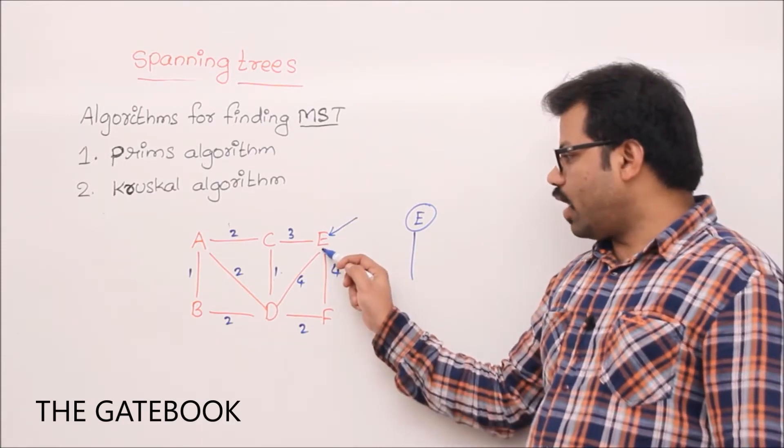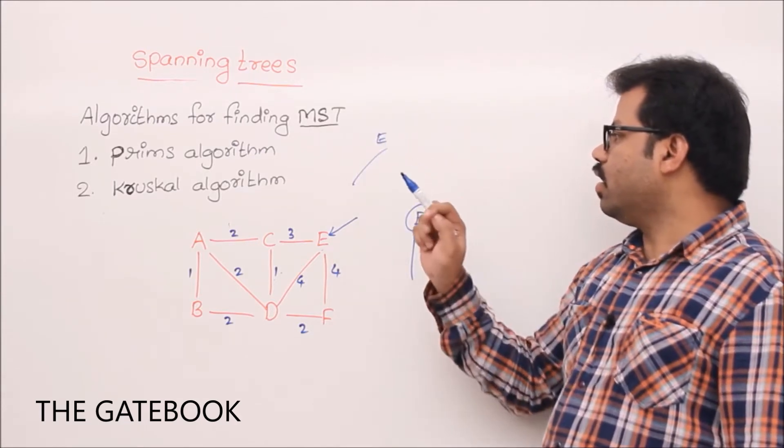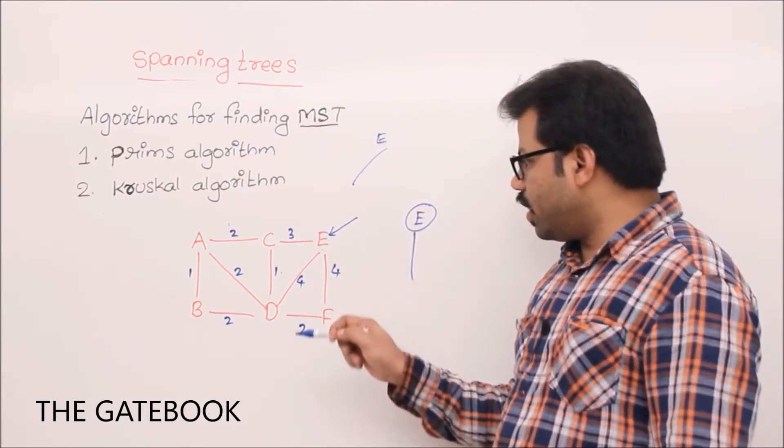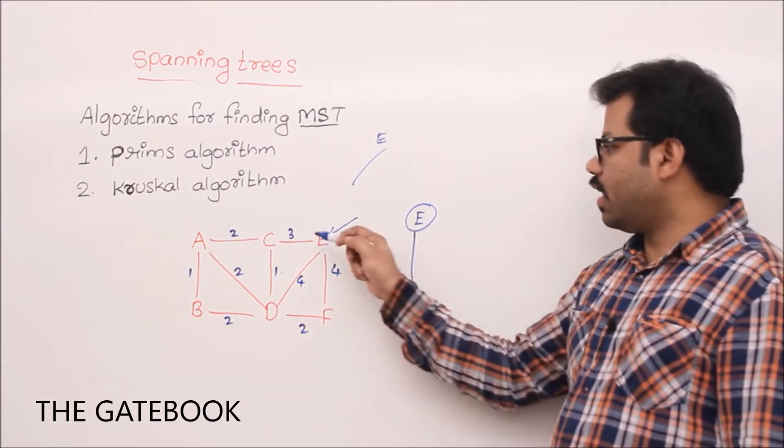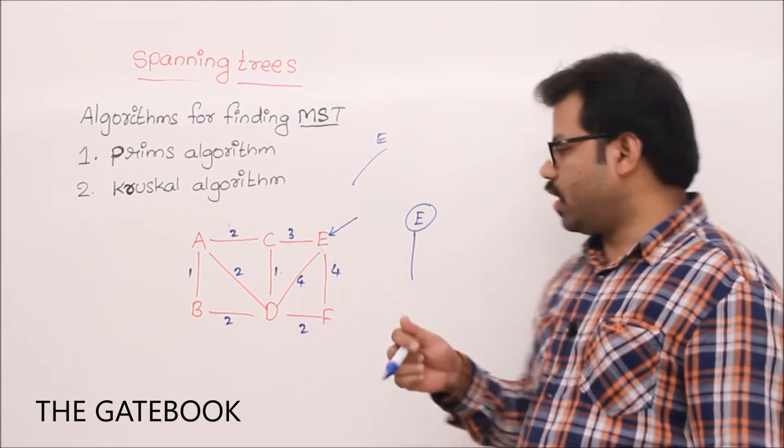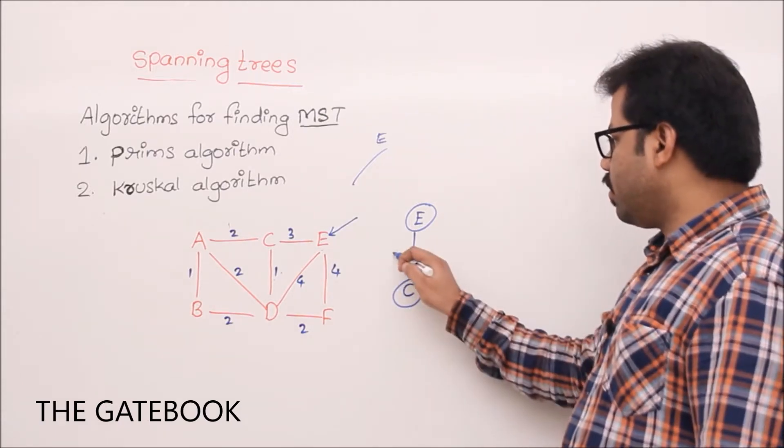EC should be part of minimum spanning tree. The reason, finally, we have to connect E. In the spanning tree, E should be connected by someone, right? That someone, if you see the possibilities, we have only CE possibility, DE possibility, FE possibility. That's why, still I can say that CE is the best possibility to connect E to the graph. So, that's why CE is 3, correct?